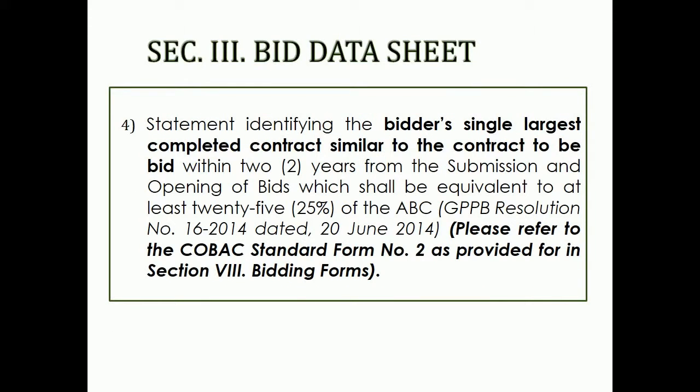4. Statement identifying the bidder's single-largest completed contract similar to the contract to be bid within two years from the submission and opening of bids, which shall be equivalent to at least 25% of the ABC.